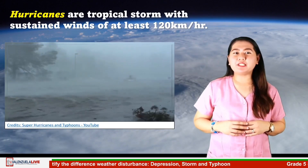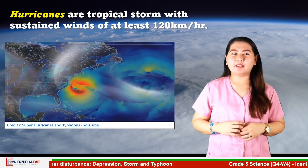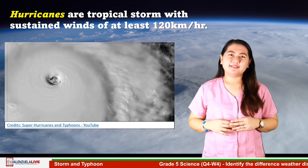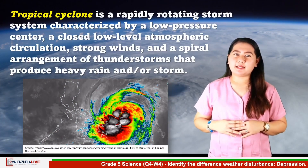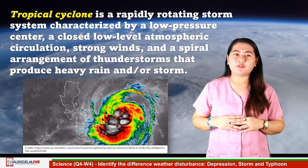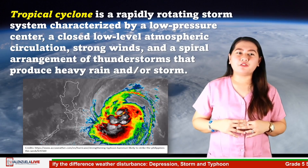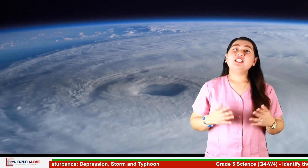Hurricanes are tropical storms with sustained winds of at least 120 kilometers per hour. It is a powerful cyclone that forms over tropical oceans. A tropical cyclone is a rapidly rotating storm system characterized by a low pressure center, a closed low-level atmospheric circulation, strong winds, and a spiral arrangement of thunderstorms that produce heavy rain and/or storm surges. The general term for low pressure areas in the tropic regions is tropical cyclone.